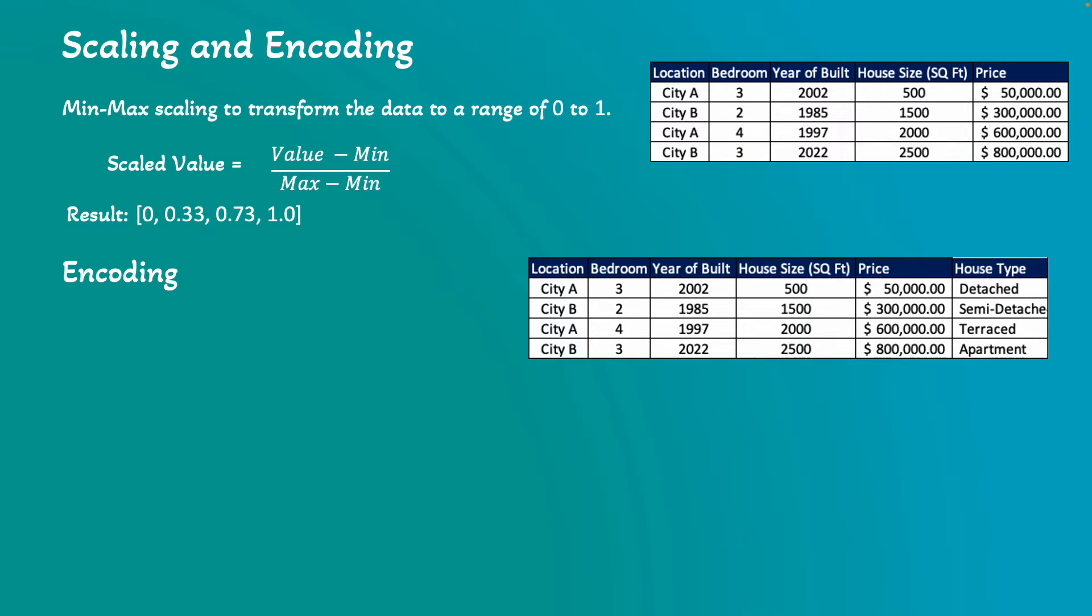Next, let's review encoding. Let's assume our sample dataset has a feature called house type, and the values are detached, semi-detached, terraced, and so on.